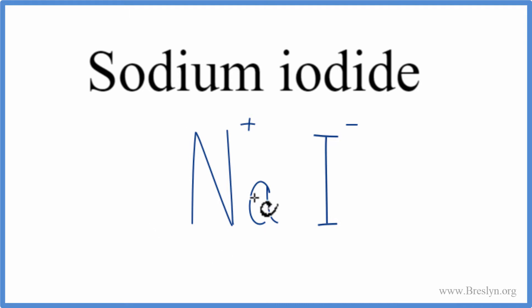So for ionic compounds, these charges need to add up to 0, have a net charge of 0. And in this case, plus 1 and minus 1, they do. They balance out, the net charge is 0, and this is the correct formula for sodium iodide, NaI.